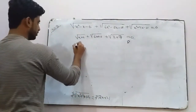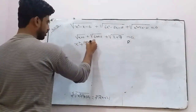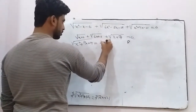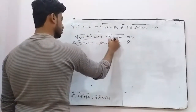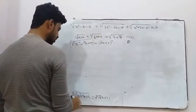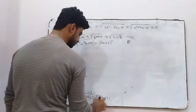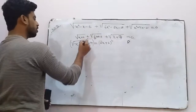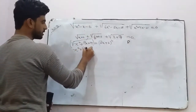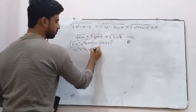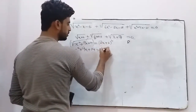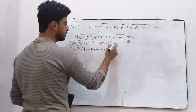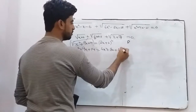Squaring both sides: x² plus 9x plus 14 equals (2x plus 2)². Expanding the right side: 4x² plus 2 times 4x plus 2 times 2x plus 4, which gives 4x² plus 8x plus 4.